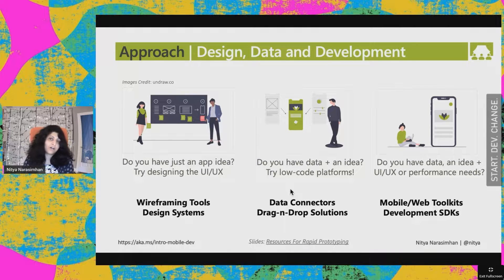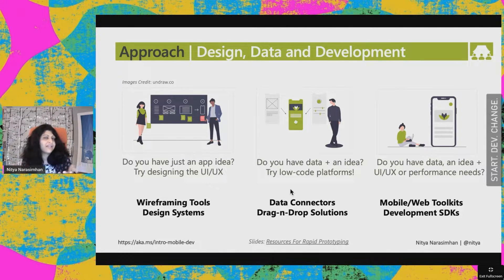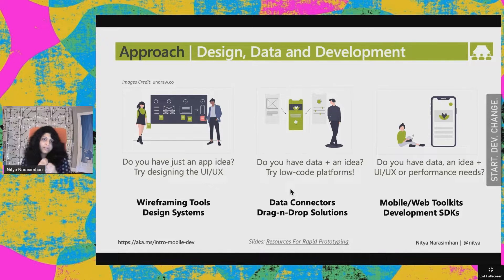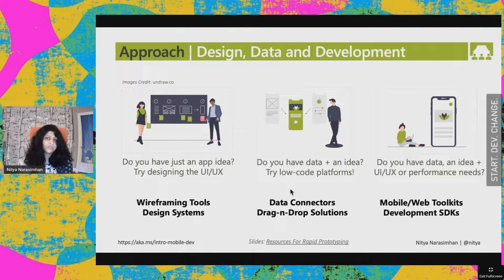From a broader perspective, when thinking about how to go from an idea to building it, there's a roadmap. If you just have an idea, start with design — wireframing tools and design systems to map out UI flows. If you're at a company with data and want to improve user experience, look at drag-and-drop solutions like Power Platform, which has data connectors without needing to code. But if you want to build new features with high performance, that's where you need to learn development SDKs, toolkits, and design patterns.